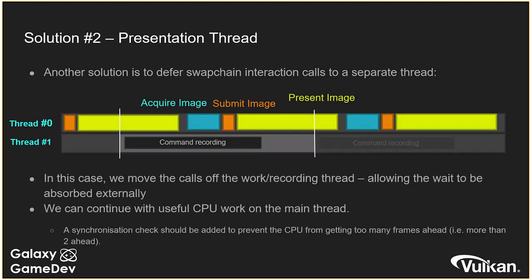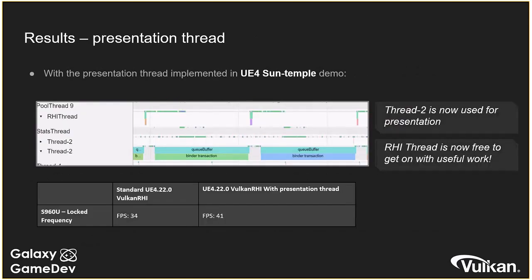You'll still need some form of synchronization point, but the idea is that we're always using our CPU threads for effective work rather than sitting around waiting. Looking at performance figures on an S9 Adreno chip, just from implementing this second thread we got an increase from 34 to 41 FPS. I'm stressing this because it's something people can completely miss — all major game engines we've worked with have this problem, and a simple workaround like this can give a huge unexpected performance increase.